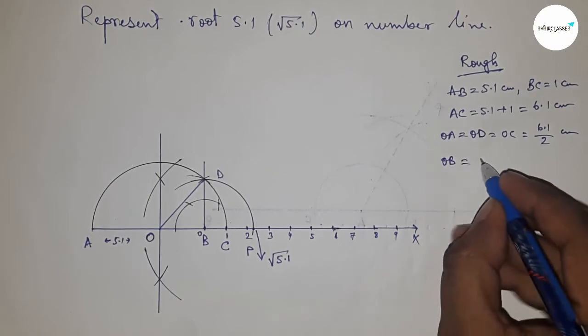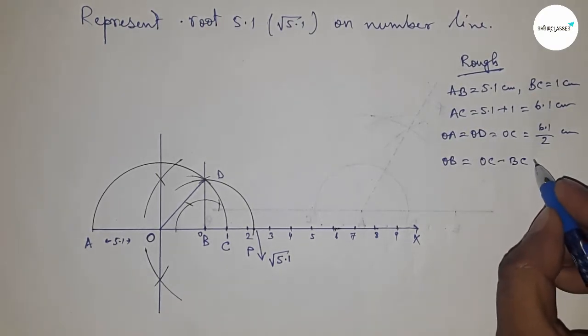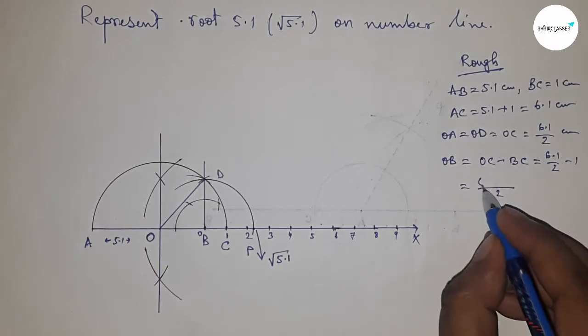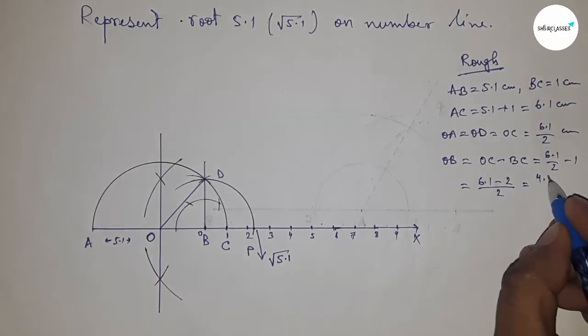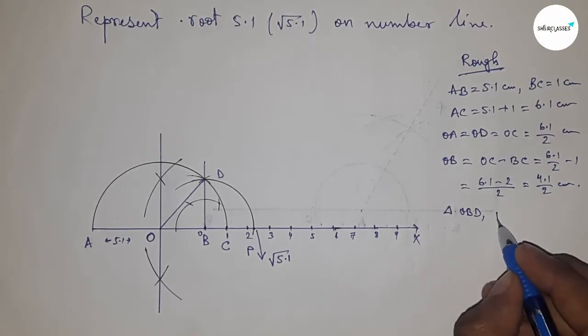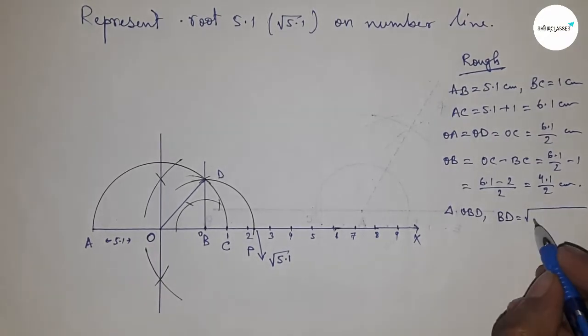Now OB = OC - BC. Putting the value of OC and BC and after calculating, this is 4.1/2 centimeters. From right angle triangle OBD, we can write by Pythagorean theorem: BD = √(OD² - OB²).